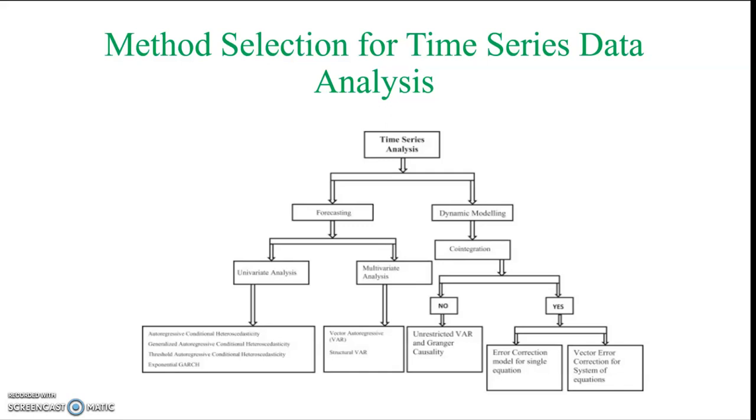In case of univariate analysis we may have autoregressive conditional heteroskedasticity model that is ARCH models. We may have GARCH models where GARCH stands for generalized autoregressive conditional heteroskedasticity or we may have TARCH models that is threshold autoregressive conditional heteroskedasticity or we may have exponential GARCH.